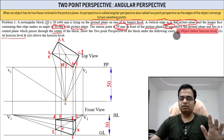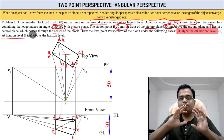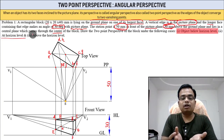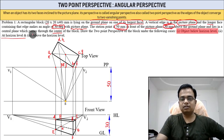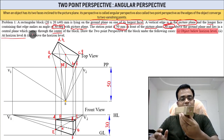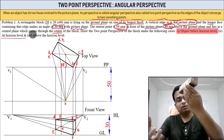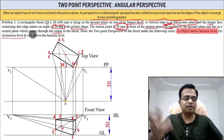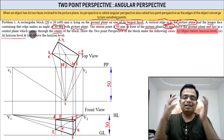This problem may appear in your university exam as just one case. I've made three cases to show you how the perspective changes: if you keep the object below the eye level, at the eye level, or above the eye level — to help you understand how perspective changes.